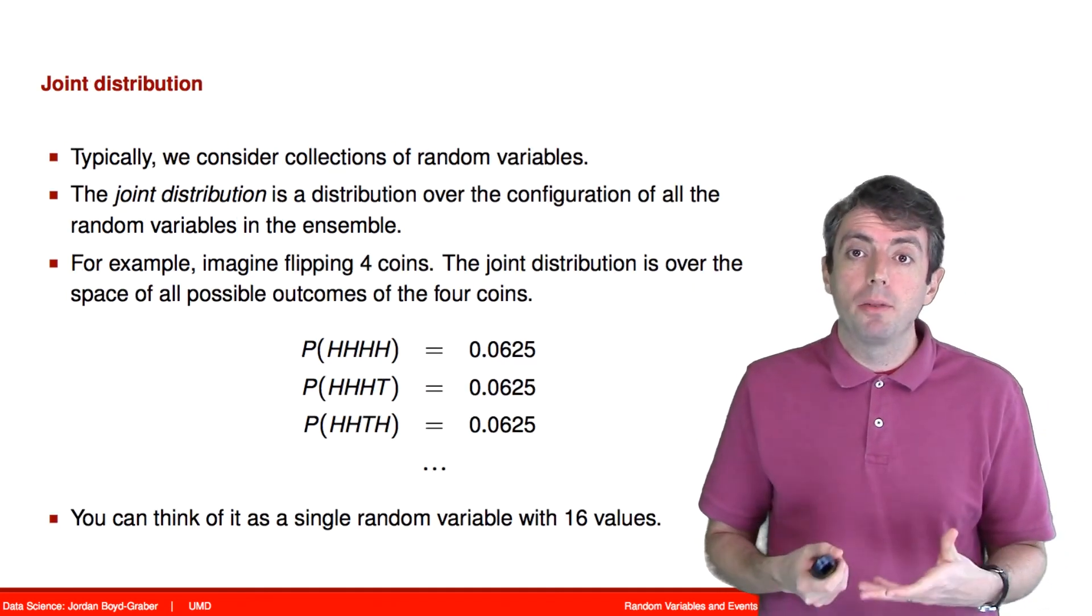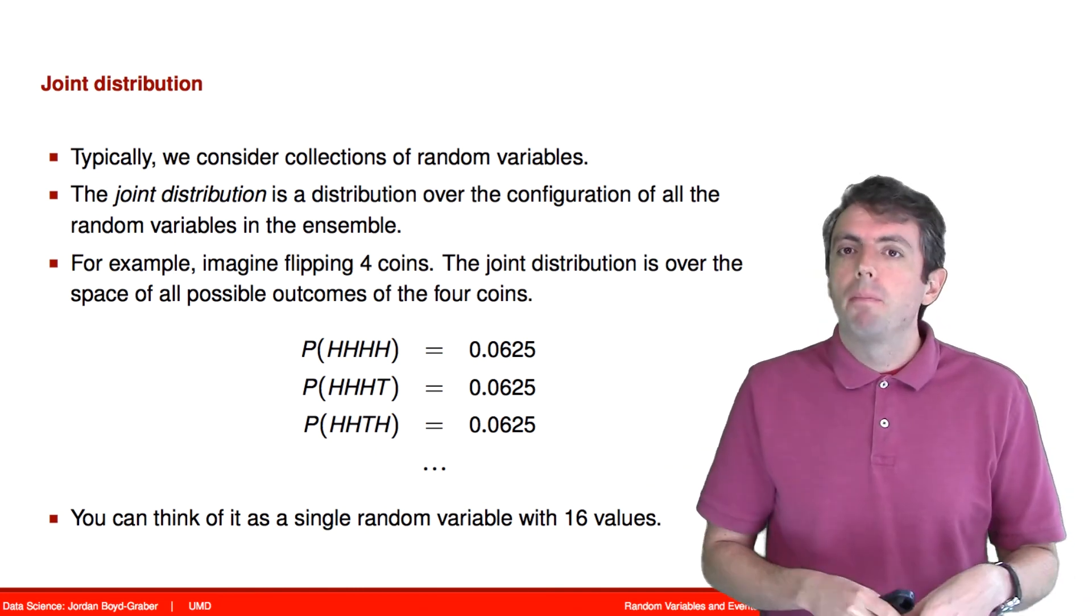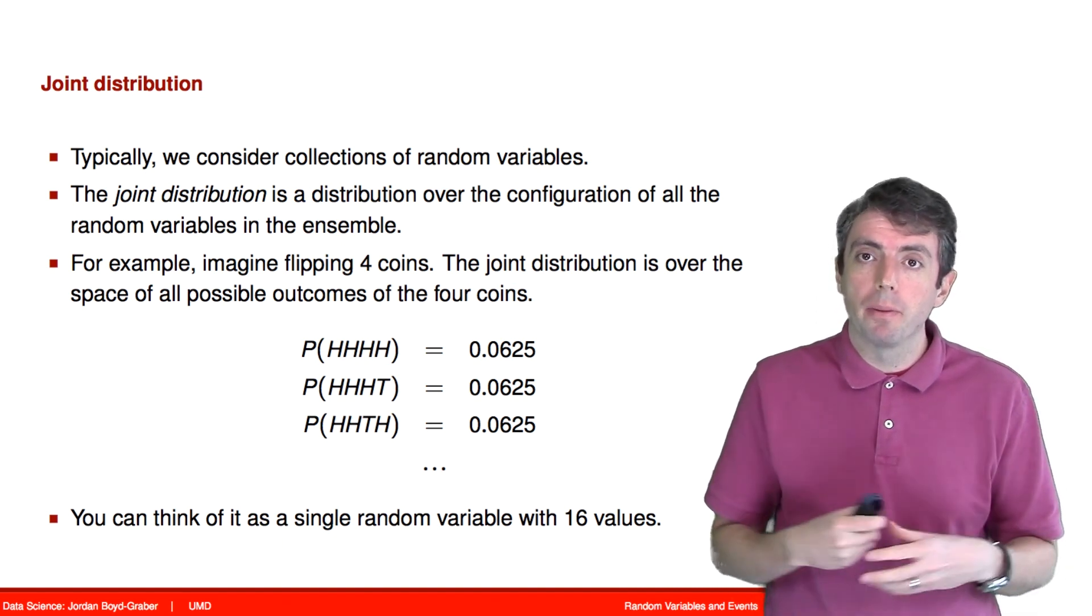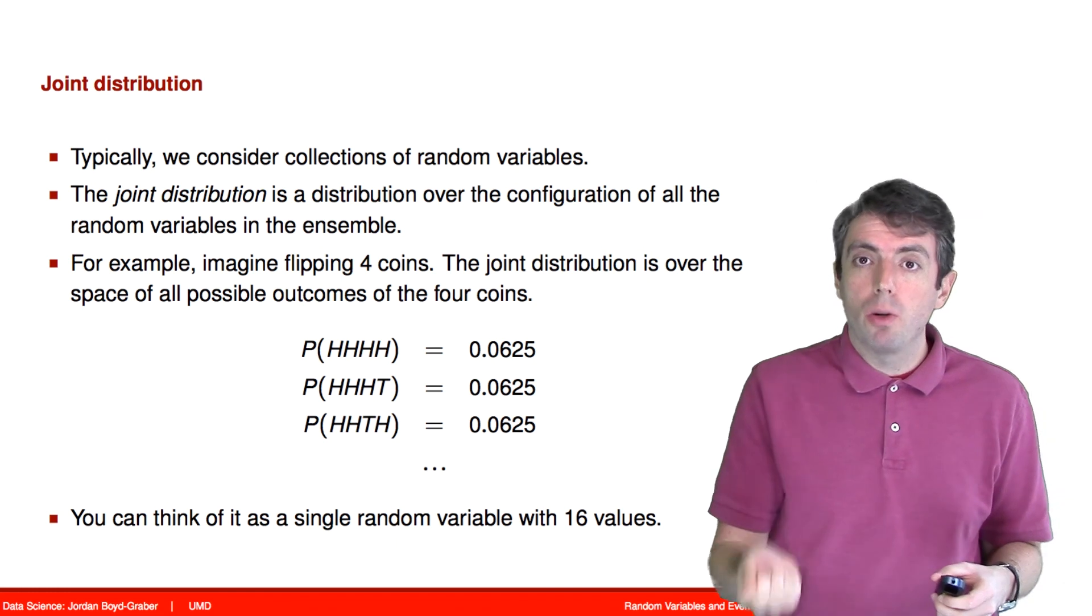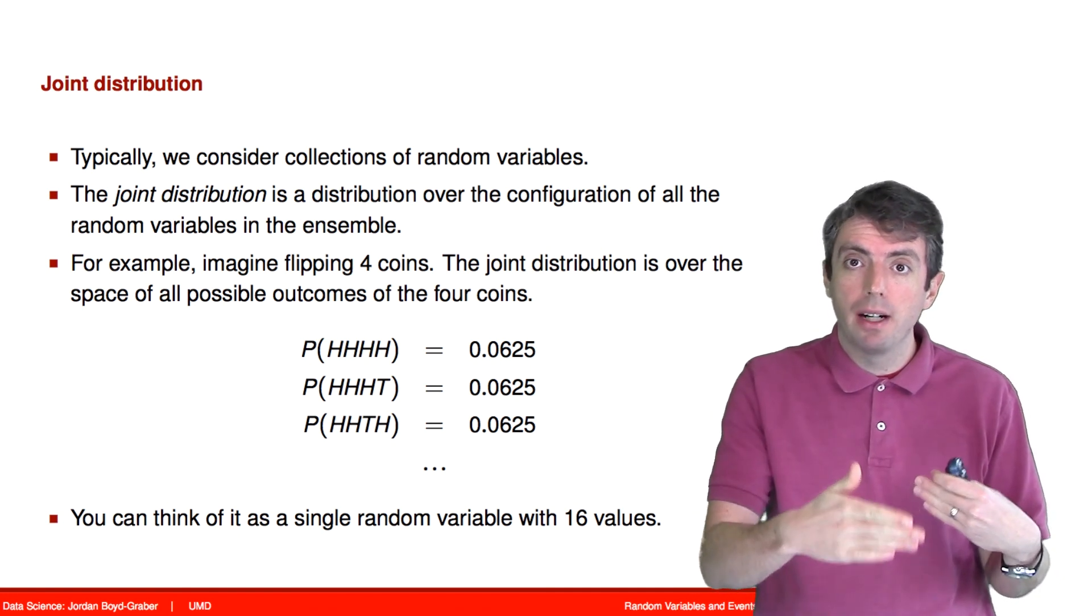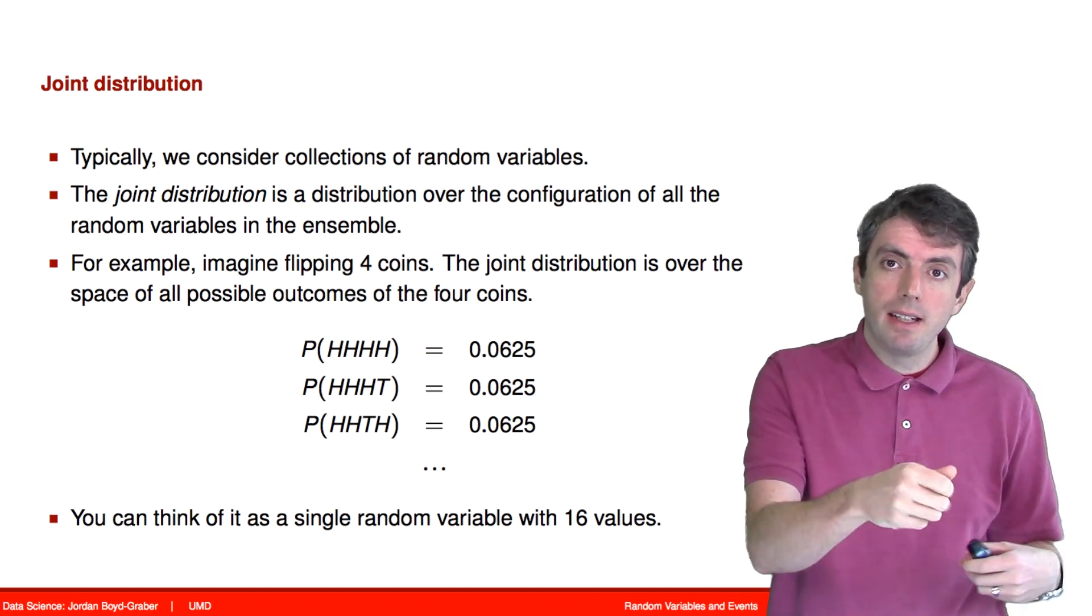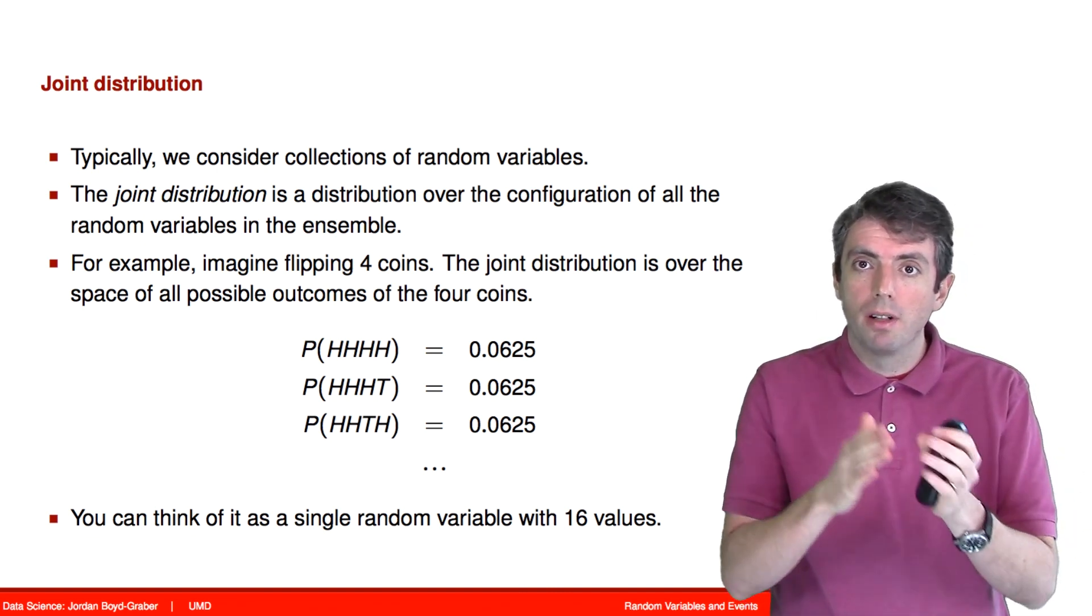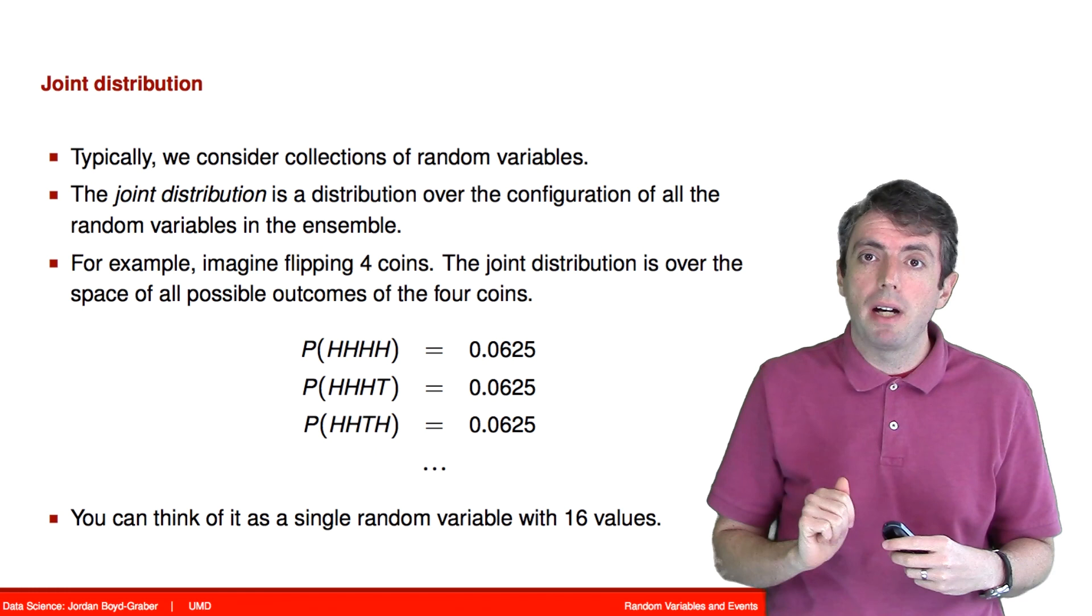Thus far, we've been talking about distributions of a single random variable. But random variables often work together. We often work with joint distributions. And joint distributions are distributions over multiple random variables. So for example, think about flipping four different coins. Each of the coins can be either heads or tails. And if we think about the joint distribution over each of those four individual random events, those contribute to one of 16 possible joint events. Because each coin can be heads or tails, and so that's 2, 4, 8, 16. And in fact, you can think of it as a single random variable with 16 possible values.